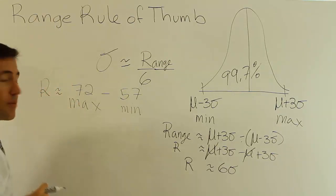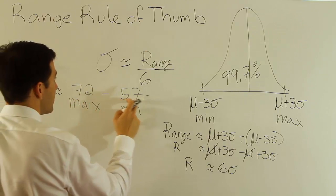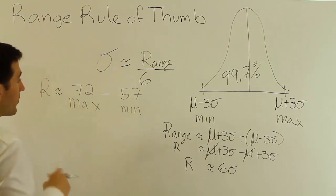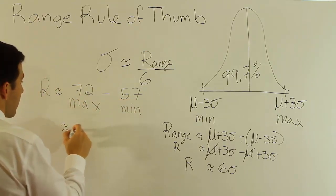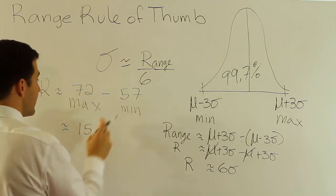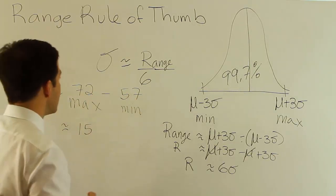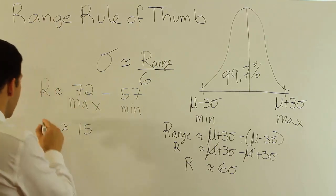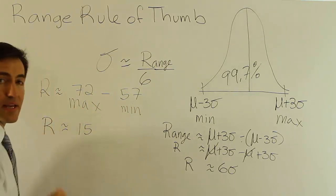So I'm going to say my range is approximately this. Well, what is the difference between 72 and 57? Well, if we work that out, I believe that's 15. If you add 15 to 57, it gives you 67 plus another 5. That's 72. So I think that's right. My range is approximately 15.